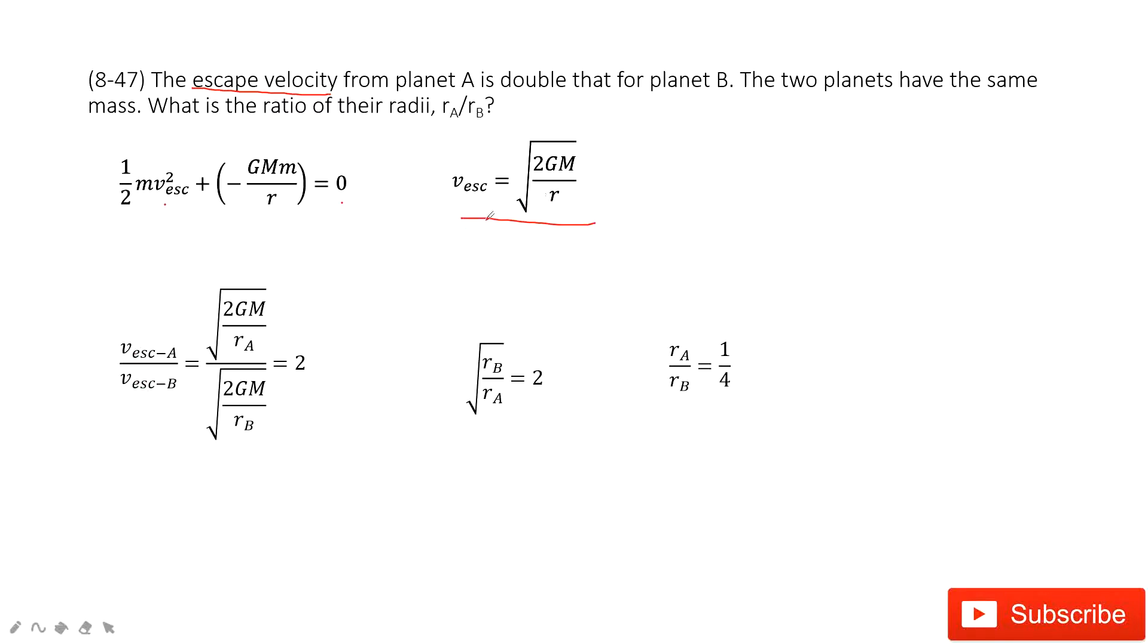And then you input this function inside. You can see in this way, we solve this function. We solve this part and get this function. And then very easily we find the radius R_A divided by R_B equals one over four. Thank you.